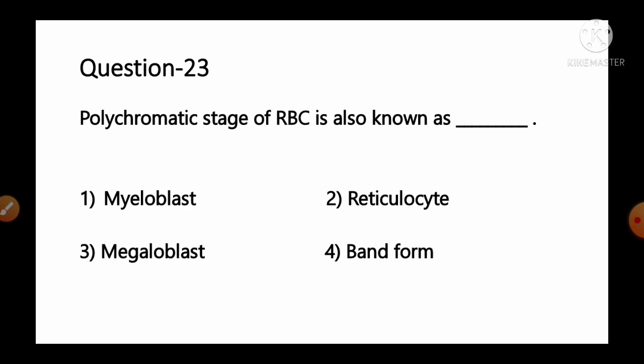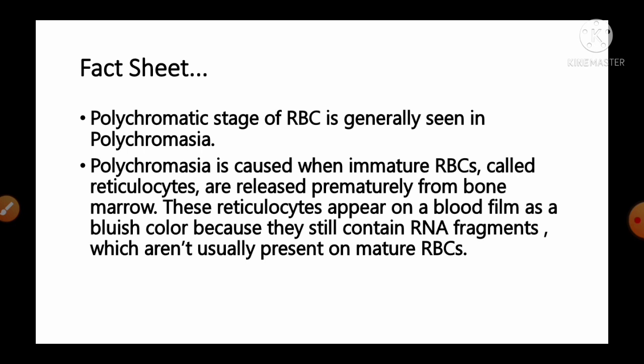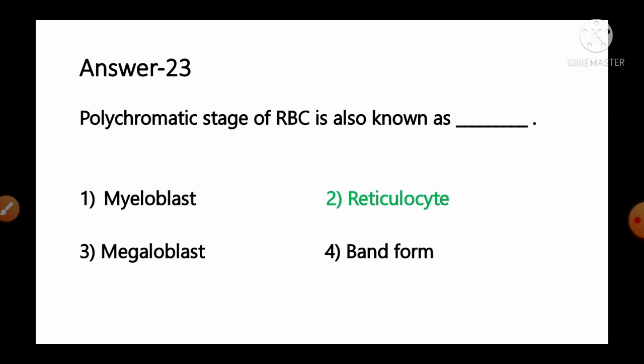Question number 23: Polychromatic stage of RBC is known as — options: 1) myeloblast, 2) reticulocyte, 3) megaloblast, 4) band form. Polychromasia occurs when immature red blood cells called reticulocytes are released prematurely from bone marrow. These reticulocytes appear on a blood film with a bluish color because they still contain RNA fragments, which aren't usually present in mature RBCs. So option number 2, reticulocyte, is the correct answer.